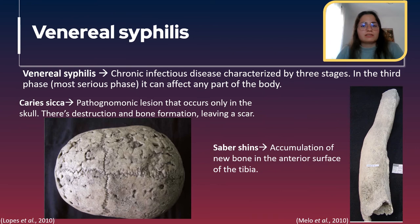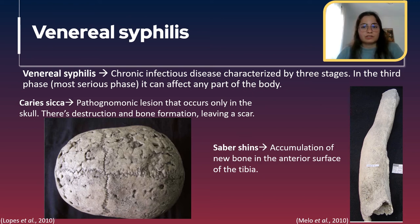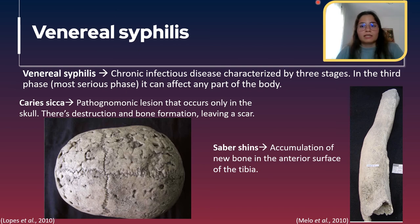Venereal syphilis is a chronic infectious disease characterized by three stages. In the last and most serious phase, it can affect any part of the body. In the skeleton, it can create caries sicca — this is a pathognomonic lesion, meaning it is characteristic of this disease. These lesions occur only in the skull and involve destruction and bone formation that leaves a scar. You can see here all of these lesions — this is all caries sicca. Interestingly, these lesions never make a complete hole in the skull and do not cause the death of the individual, although they leave people extremely disfigured.